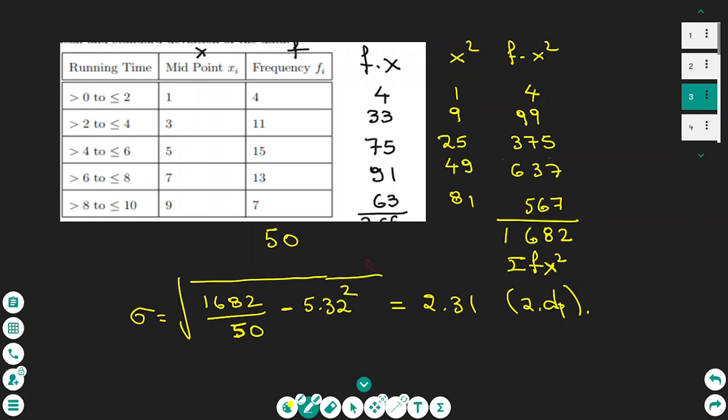This goes into the formula under the square root as the numerator of the fraction. So it is 1682 over 50, where 50 is the sum of the frequency. I subtract the square of the mean. Doing the calculations, this gives the standard deviation as 2.31.